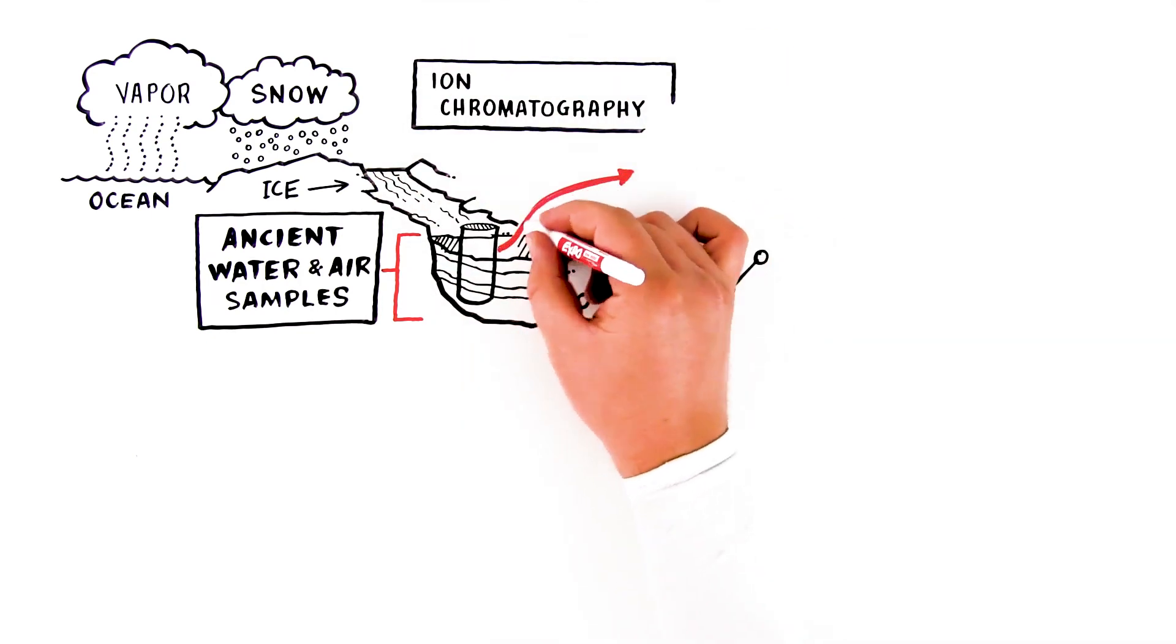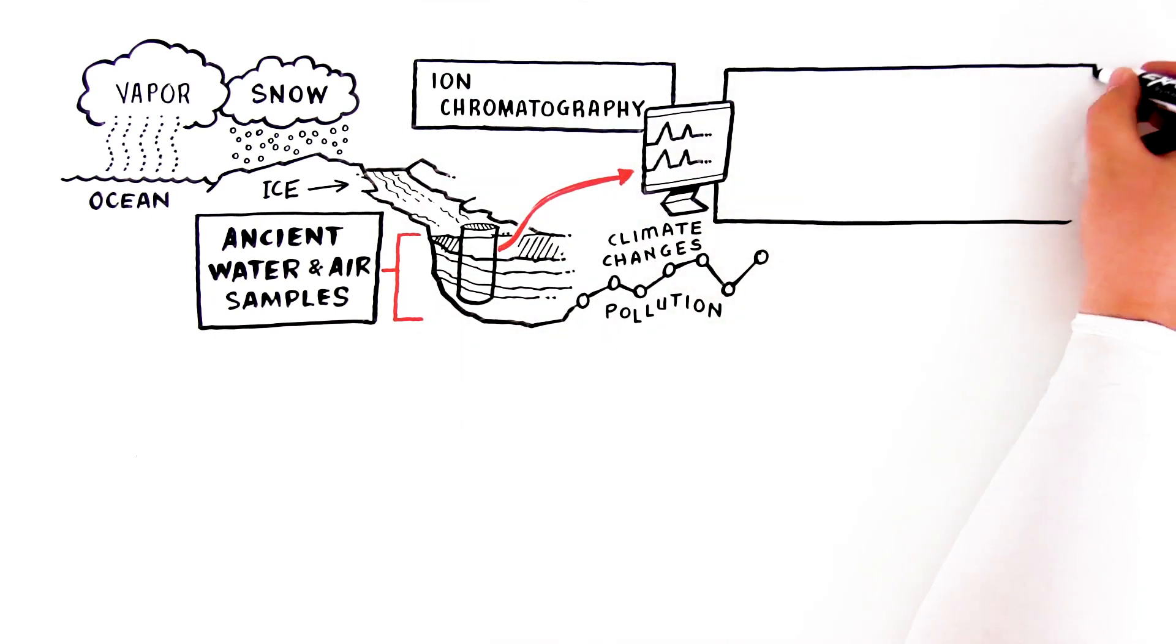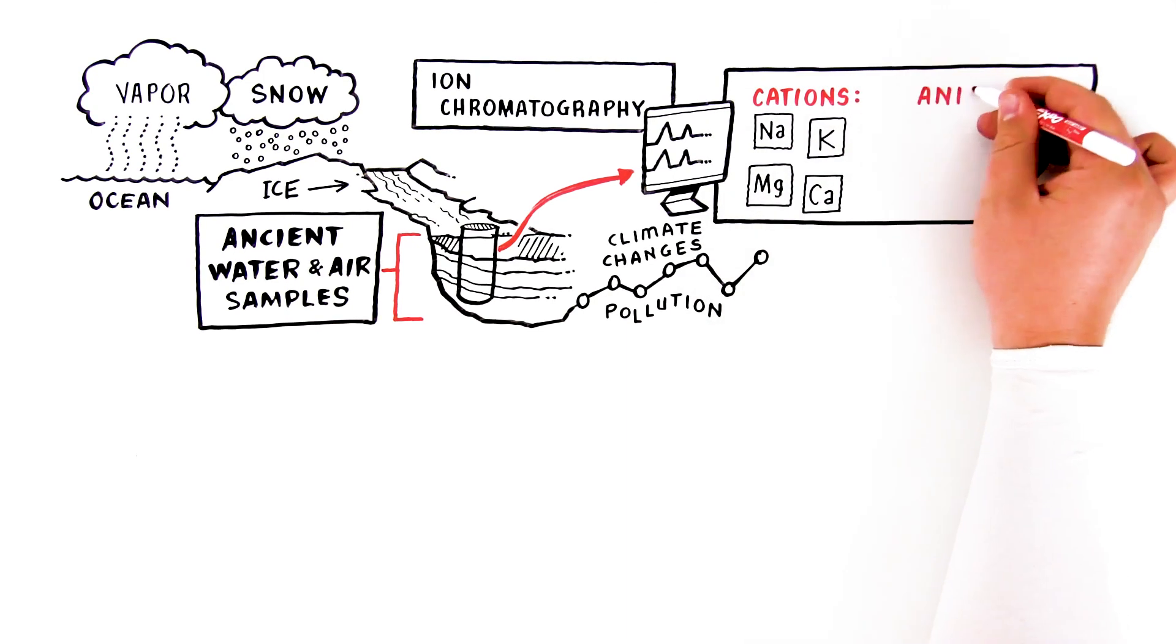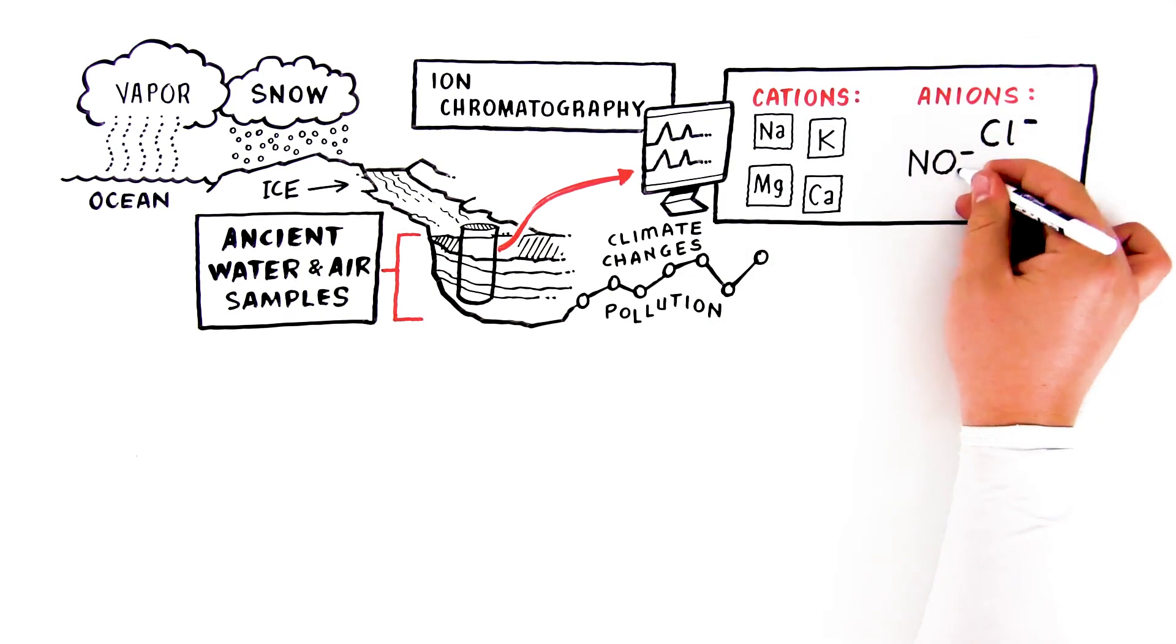With ion chromatography, sample impurities can be traced to certain cations such as sodium, potassium, magnesium, and calcium, and anions such as chloride, nitrate, and sulfate.